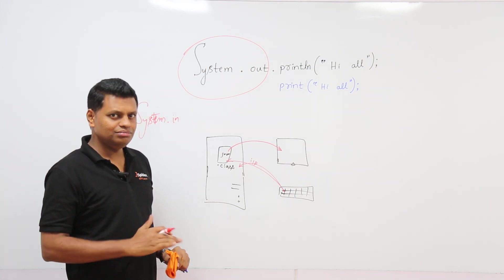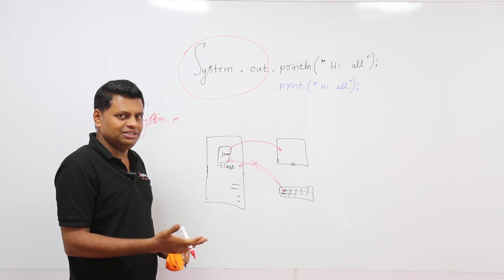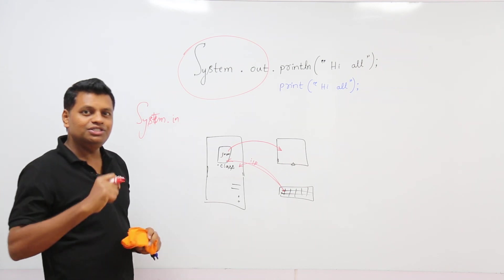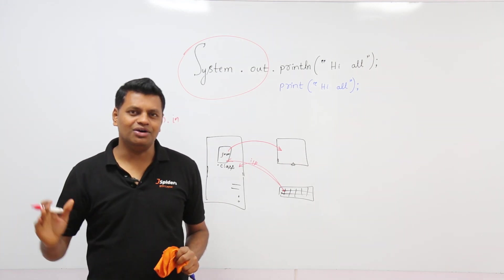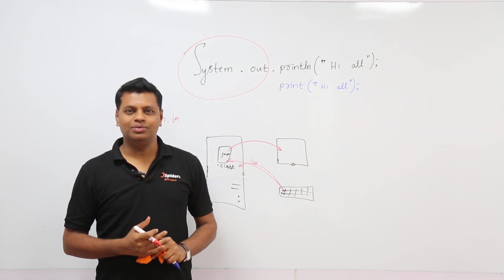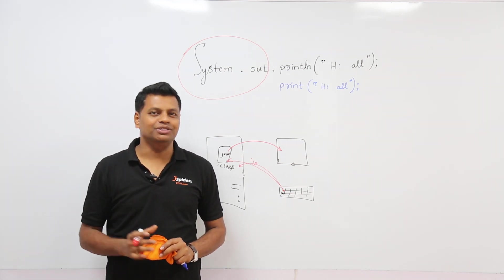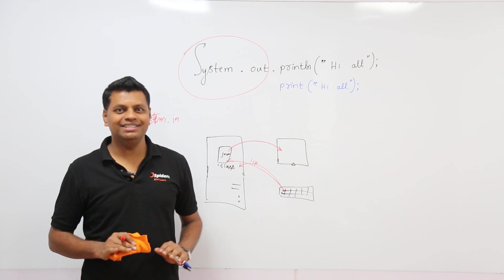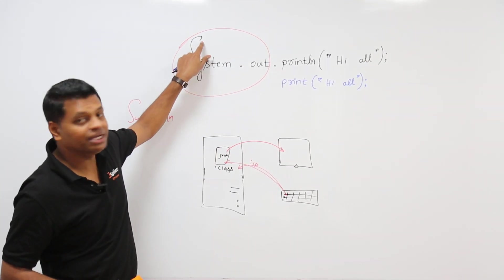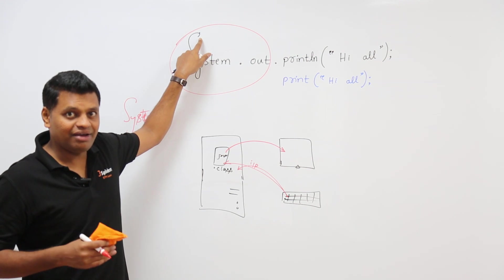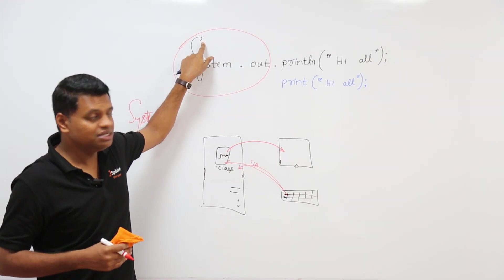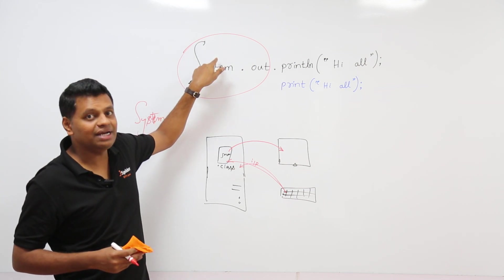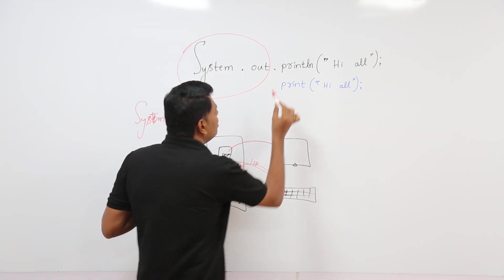That's the functional understanding. Technically, going deeper: System is an inbuilt class in Java. Sun Microsystems has already developed a class called System, which is present in the java.lang package. Its fully qualified class name is java.lang.System. Notice it starts with uppercase — following the standard Java convention that all class names start with uppercase.